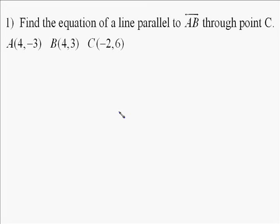The following problem asks us to find the equation of a line parallel to AB, but through the point C. To do this, what we need to first understand is that parallel lines have the exact same slope.